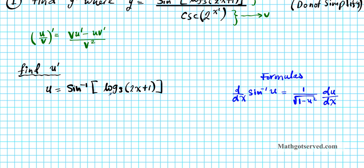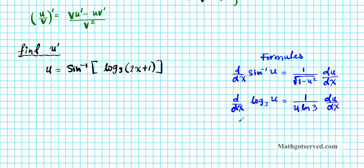Next, shifting attention to the log base 3 function: d/dx of log base 3 of u equals 1 over u times the natural logarithm of the base — in this case 3 — times du/dx, because we're using the chain rule. For the innermost function, d/dx of 2x plus 1, we don't need the chain rule; the derivative is simply 2, using the sum rule and power rule.